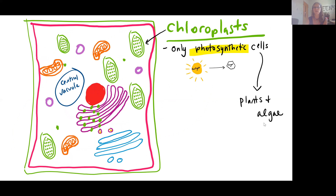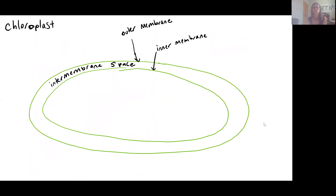Chloroplasts are the other important energy organelle. We'll see this in photosynthetic cells — in our plant cells and in algae, which are photosynthetic protists. The process of photosynthesis has a chapter dedicated to it as well, but essentially we're taking solar energy and converting it into sugar molecules. Those sugar molecules are then used by the plant cell to make ATP.